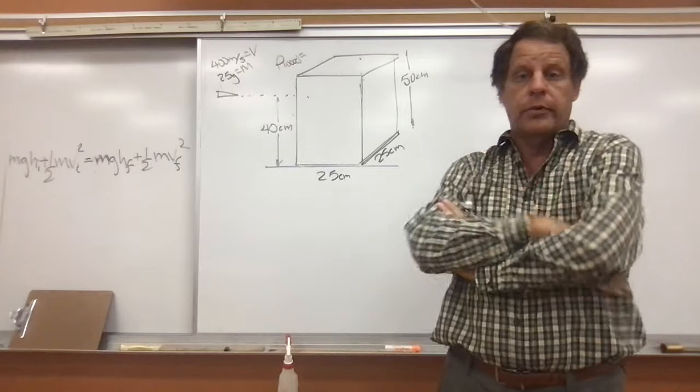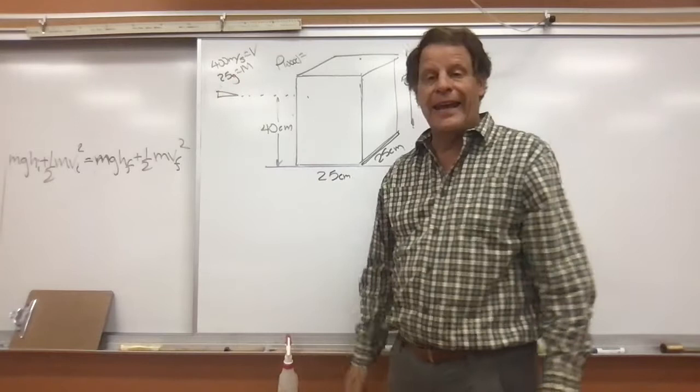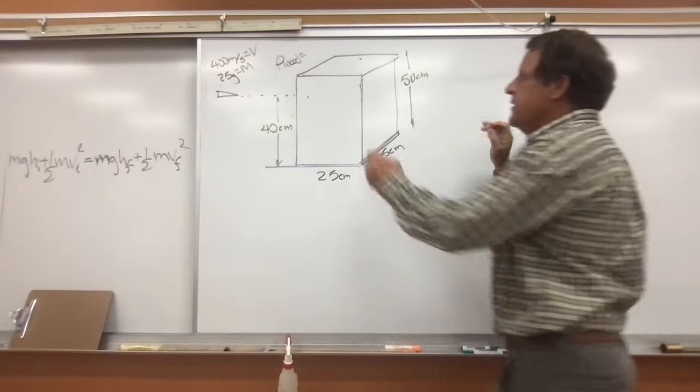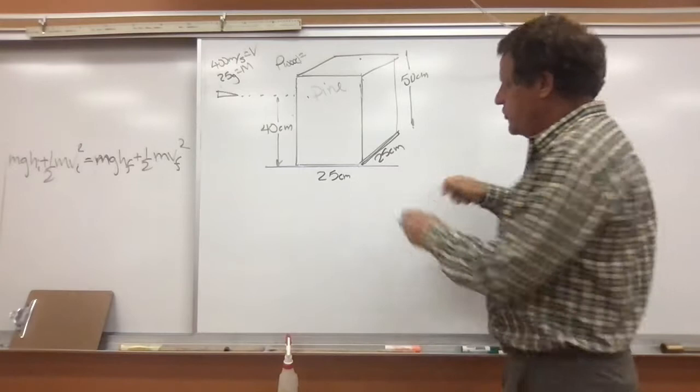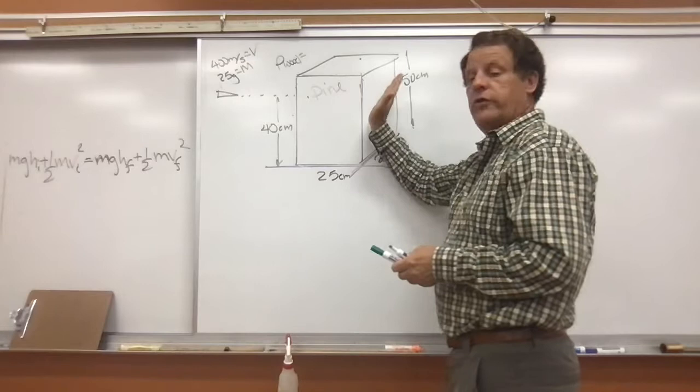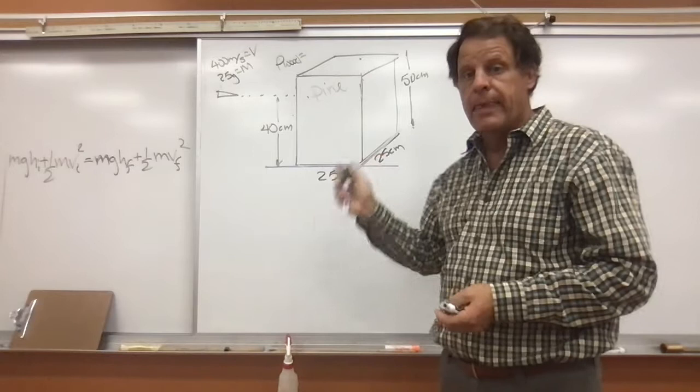Hi, hello everybody. This is going to be a lecture primarily on how to do this problem, which is going to involve lots of stuff that we have already learned plus newer stuff. This particular problem involves a bullet with a mass of 25 grams going at 400 meters per second, hitting a block of pine wood that measures 25 by 25 by 50 centimeters. It's constrained at the bottom, so when the bullet hits, it's going to cause the block to tilt up. The question is: does this block of wood topple over?